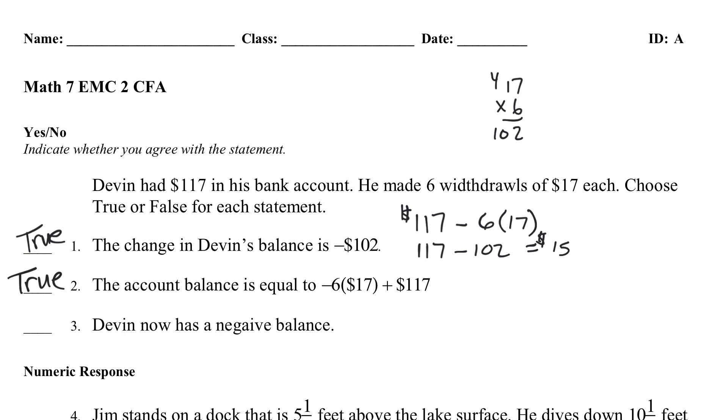And let's see now. Devin now has a negative balance. Well, the balance is the money that you have left over in the end. He still had $15. He didn't go over the amount that he had. He still has a positive amount. So, this would be false. So, there you go. True, true, and false.